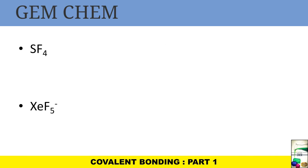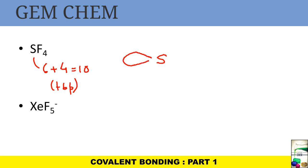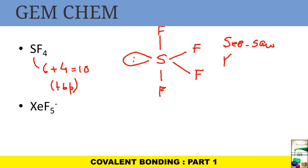For SF4: six plus four equals ten — a TBP structure. Four positions are occupied by fluorine, and the one remaining position is occupied by a lone pair in the equatorial plane, with two fluorines in equatorial positions and one fluorine up and one fluorine down (axial). The shape is seesaw, also written as K-shaped.